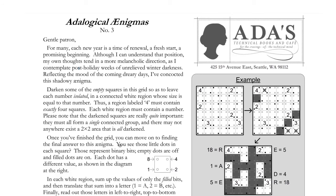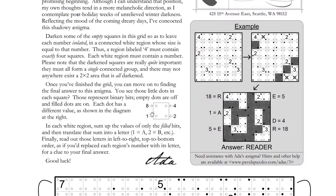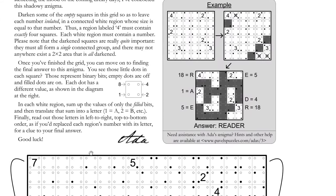Once you've finished the grid, you can move on to finding the final answer. It's the binary dots again. In each white region, sum up the value of only the filled bits. Finally, read out those letters in left to right, top to bottom, as if you'd replaced each region's number with its letter, for a clue to your final answer. Good luck.